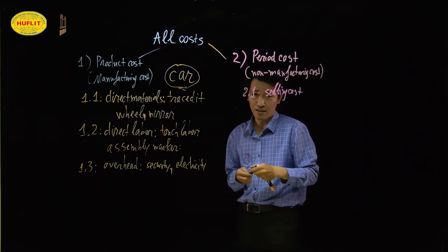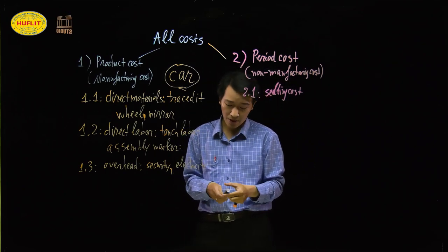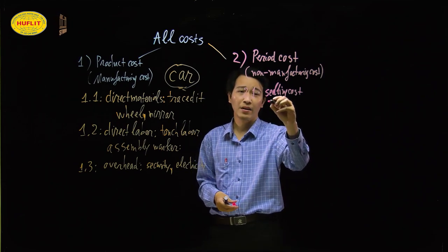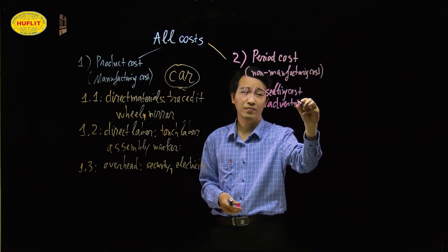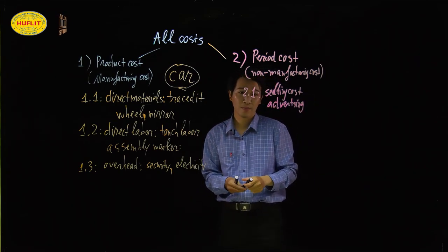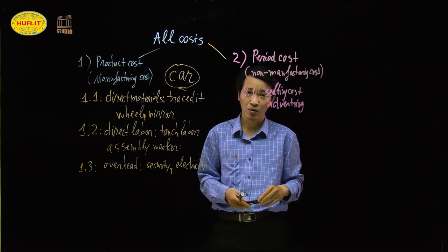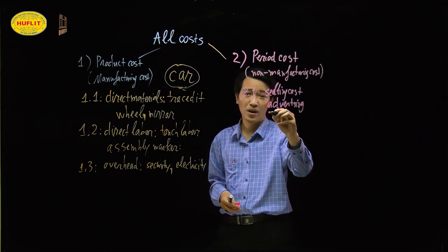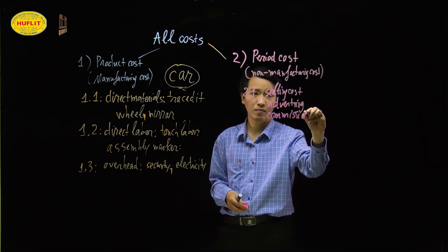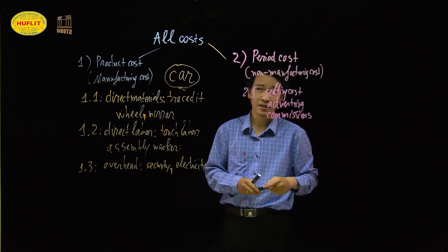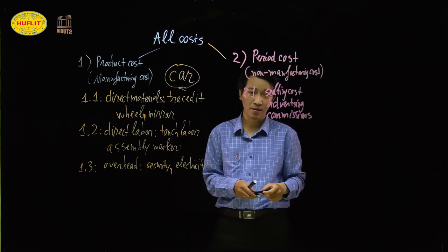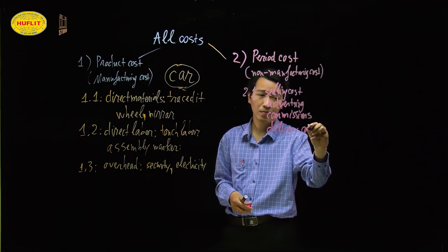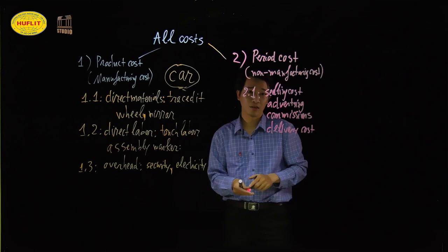What is included in selling cost? After we finish making the car and want to sell it to the customer, we need advertising so customers know what cars we have. When the customer comes to our showroom and the salesperson successfully sells the car, we pay a commission — a fee to the salesperson for helping us sell the car. We also need delivery cost to ship the car to the customer's location.